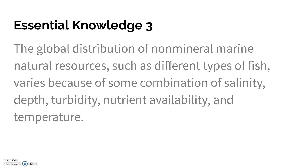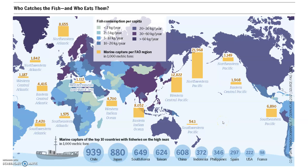The distribution of marine natural resources like fish also varies because of some combination of salinity, depth, turbidity, nutrient availability, and temperature. The biggest takeaway is that because a biome determines what can grow and come from there, when these biomes change — when their climates change — it affects economy, food availability, and more. There's actually a pretty cool chart showing where most of the fish come from.